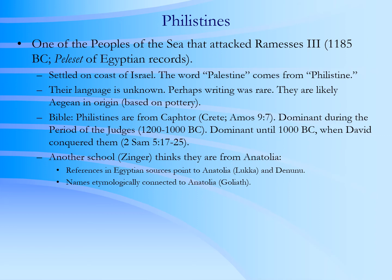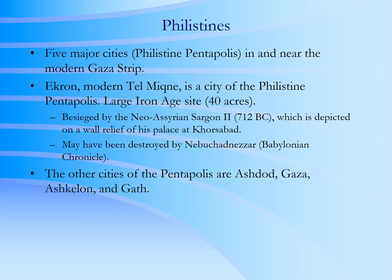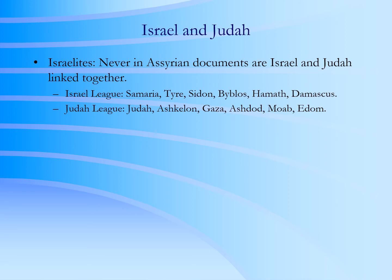As was noted before, the Philistines were one of the peoples of the sea that attacked the Egyptians at the end of the Bronze Age. Also in this early Iron Age period is the establishment of the kingdoms of Israel and Judah. What is interesting to note about these two kingdoms is that in the Assyrian documents of the time they are never linked together. Israel is usually mentioned as in league with Samaria and the Phoenician cities of Tyre, Sidon, and Byblos, and Damascus in Syria, while Judah is usually associated with Ashkelon, Gaza — the area of the Philistines — and Moab and Edom.